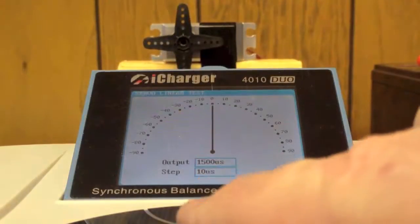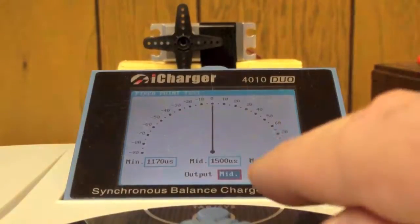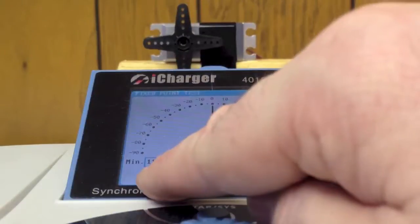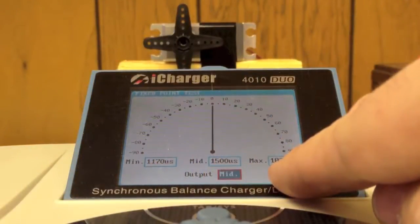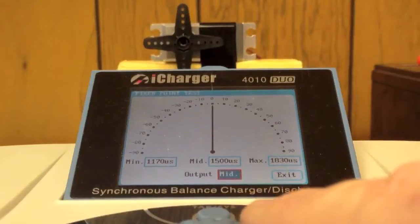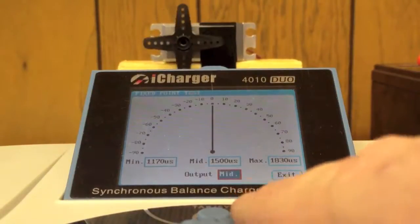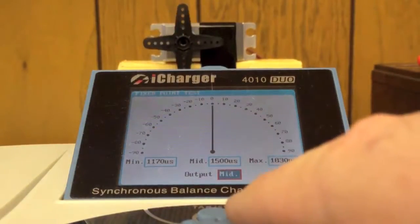Now I've set this to 1170 on the bottom, 1500 is my midpoint, and 1830 as my high point, my maximum. And the reason I did that is when I move my dial here you'll see that we go to negative 30 degrees off of zero, mid is zero, and we'll go to 30 degrees on the positive side. But I'll show you where I got that number from in a moment.